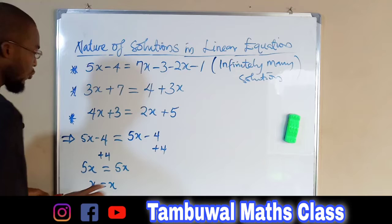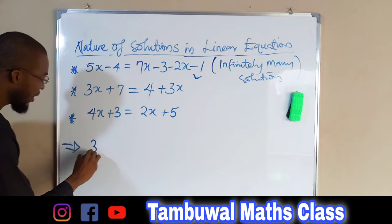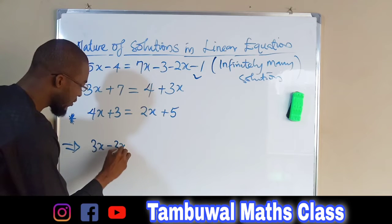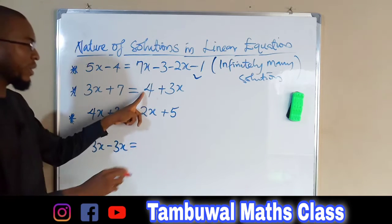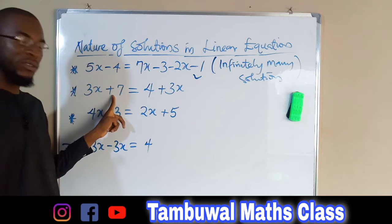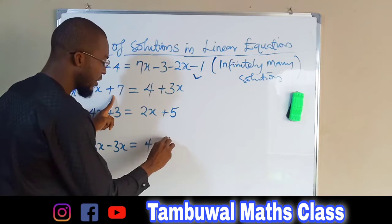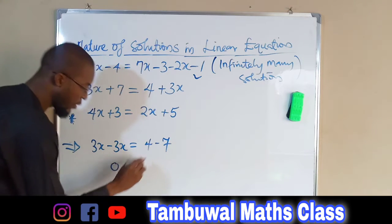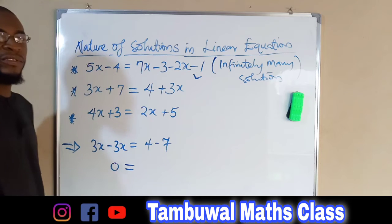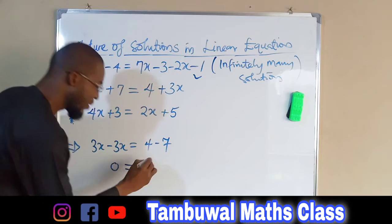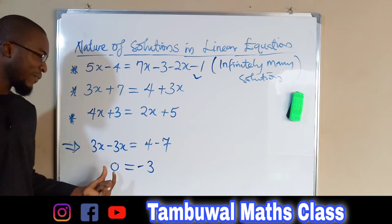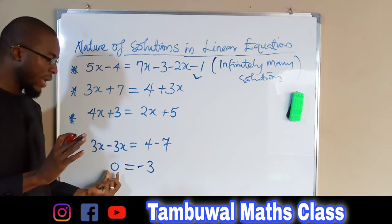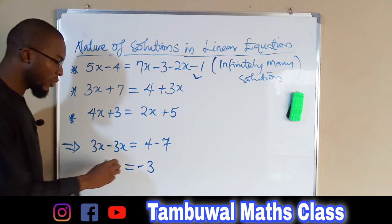Now let us move on to the second equation. We have 3x, and once 3x crosses the equality sign it will change to negative 3x. On the right hand side we have 4, and once 7 crosses the equality sign it will also change to negative. So 3x minus 3x is 0, and 4 minus 7 is negative 3.